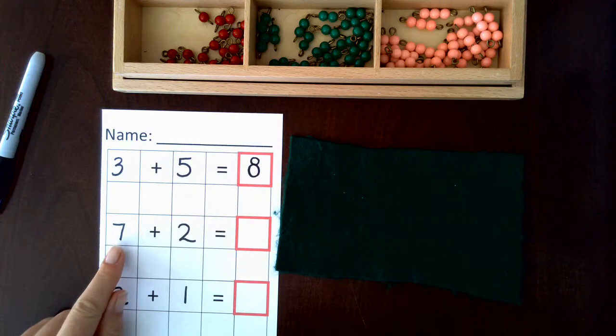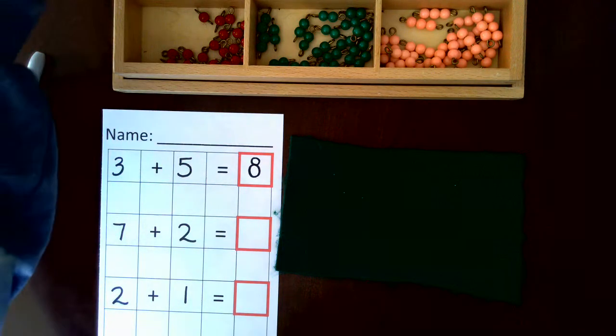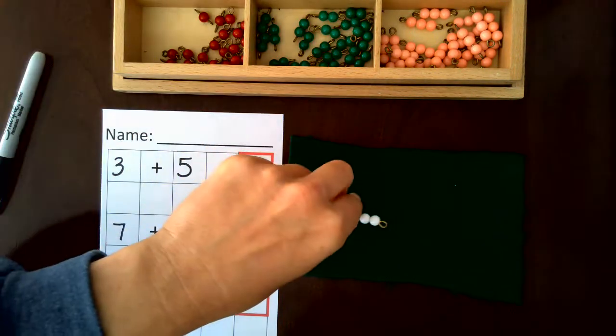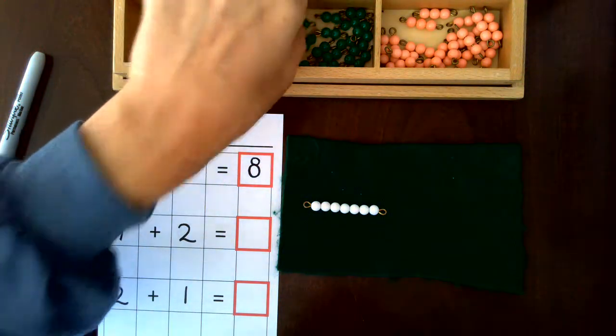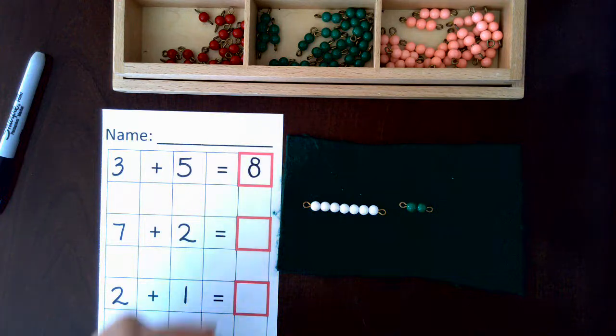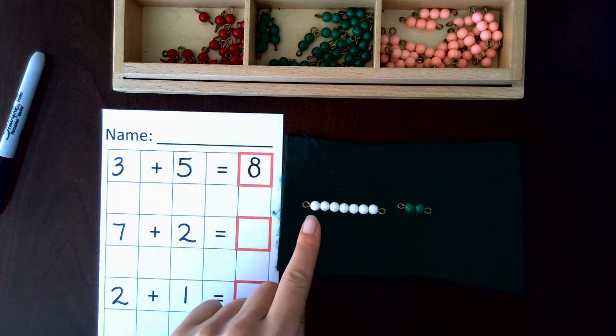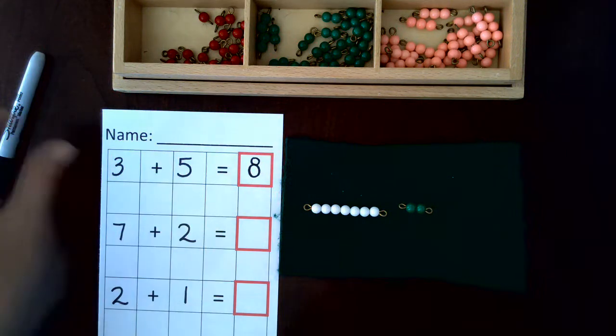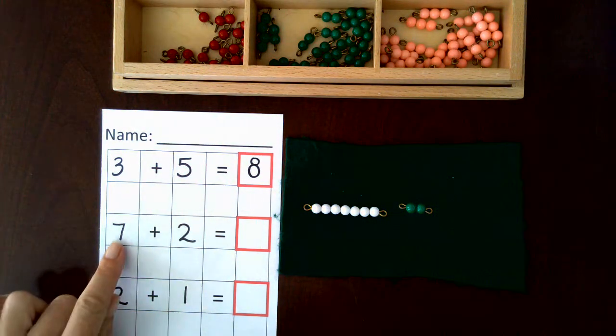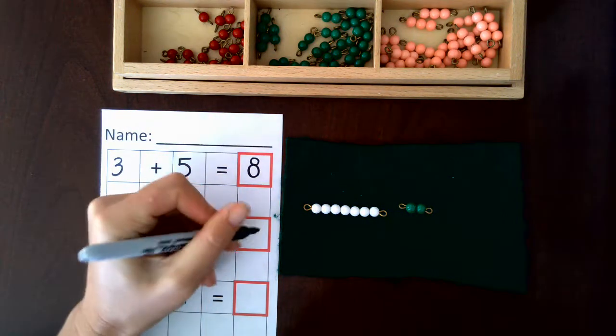Let's look at the next one: seven. So we're going to find the seven bar, plus two. Okay, so we have seven, eight, nine. Seven plus two equals nine.